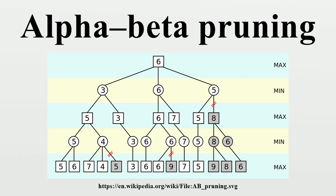Alpha-beta ensures no other second player moves need be considered. When nodes are ordered at random, the average number of nodes evaluated is roughly in between. Normally during alpha-beta, the sub-trees are temporarily dominated by either a first player advantage or vice versa. This advantage can switch sides many times during the search if the move ordering is incorrect, each time leading to inefficiency. As the number of positions searched decreases exponentially each move nearer the current position, it is worth spending considerable effort on sorting early moves. An improved sort at any depth will exponentially reduce the total number of positions searched, but sorting all positions at depths near the root node is relatively cheap as there are so few of them. In practice, the move ordering is often determined by the results of earlier, smaller searches, such as through iterative deepening.